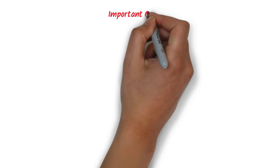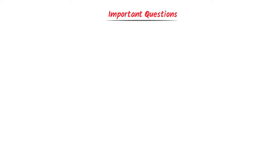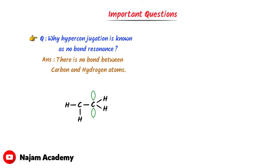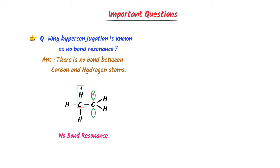Now, two important exam questions. First: why is hyperconjugation also known as no-bond resonance? It is because there is no bond between the carbon and hydrogen atoms after the shift. Consider this carbocation where hyperconjugation has occurred — hydrogen has given its sigma electron to the p orbital and there is no bond between hydrogen and carbon. Therefore, hyperconjugation is also known as no-bond resonance.